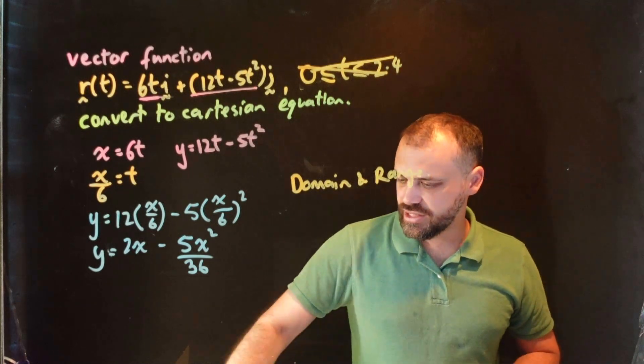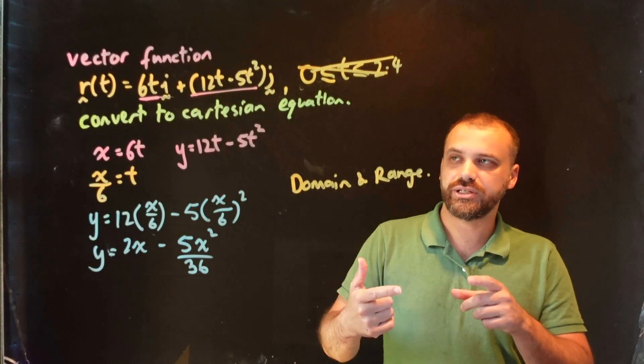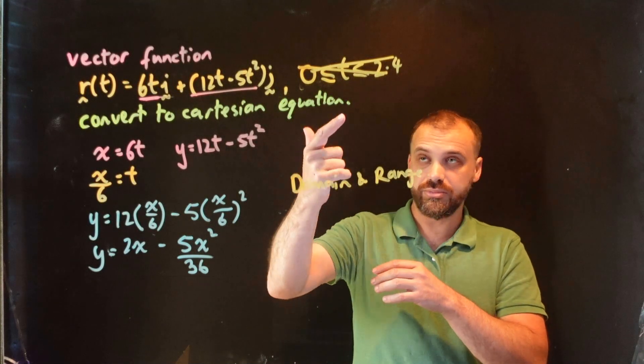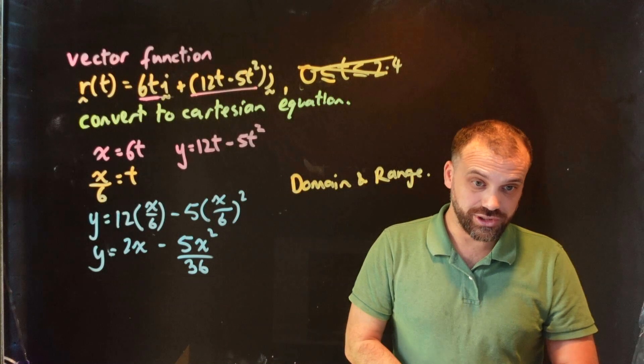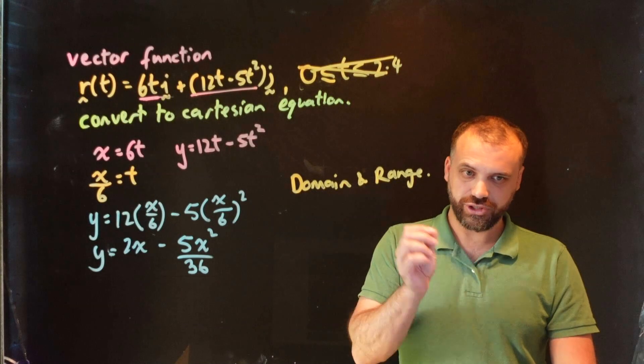Domain and range, that's things that you've done in methods. The same things apply here and it really depends on whether you've been given any restrictions on that time parameter and what your Cartesian equation actually looks like. All right, that's a pretty wide-ranging first video on vector functions.